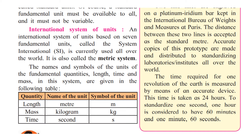Therefore we have the International System of Units, based on seven fundamental units, called the Système International — in short, SI. It is currently used all over the world and is also called the metric system. The fundamental quantities and their SI units are: length in meters (symbol m), mass in kilograms (symbol kg), and time in seconds (symbol s).